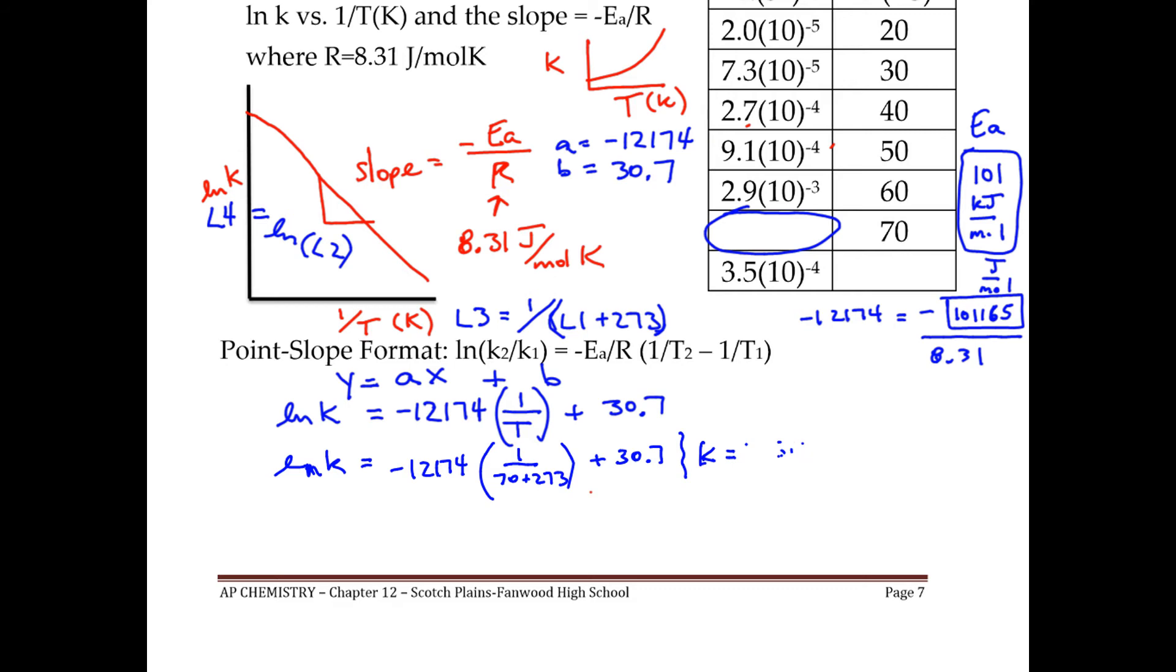Then you could start substituting for the next example. I'll write this in. 8.3 times 10 to the minus third. So that goes here. 8.3 times 10 to the minus third.